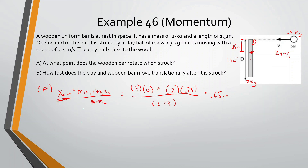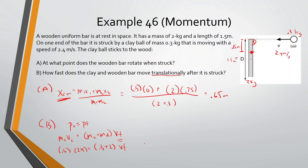How fast does the clay and wooden bar move translationally after the strike? When the ball hits, it rotates but also moves linearly because it's in space with no friction. Since both momentum and angular momentum are conserved, and we just want the translational part: mass of clay ball times velocity equals (mass of clay ball plus mass of bar) times V final. So 0.3 times 2.4 equals 2.3 times V final, giving V final equals 0.31 meters per second.